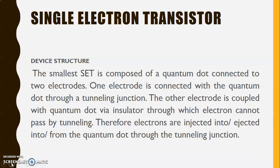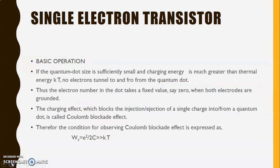The basic operation of a single electron transistor: if the quantum dot size is sufficiently small and charging energy is much greater than the thermal energy kT, no electrons tunnel to and fro from the quantum dot. Thus the electron number in the dot takes a fixed value z0 when both electrodes are grounded.